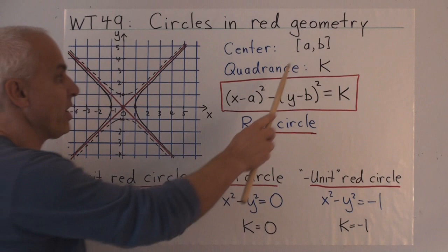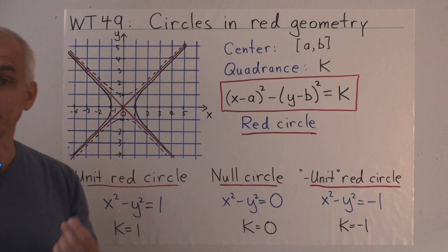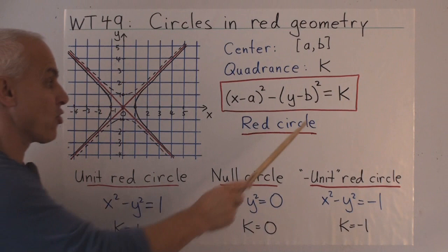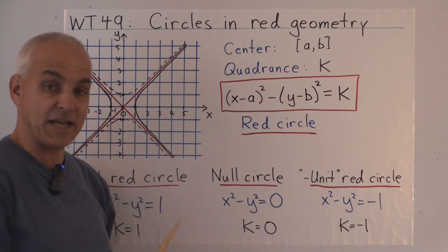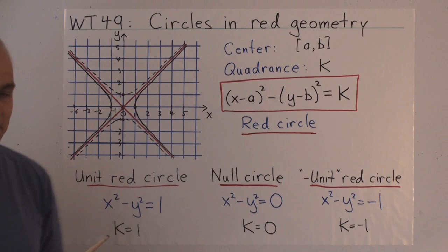So the general setup is that if we have a point (a,b) and a number K, which can be anything, then this equation here, (x-a)² - (y-b)² = K, represents the red circle with center (a,b) and quadrance K. So every point (x,y) that satisfies that equation has quadrance K from the point (a,b), because this is our formula for the quadrance between the point (a,b) and the point (x,y).